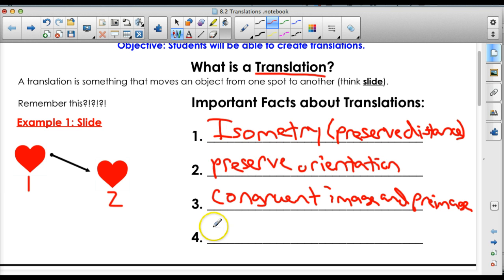And then finally, number four is there are no invariant points. Now, what does that mean? That means every point moves. Remember what invariant means? It's that the point isn't affected or it doesn't change based on the transformation. Well, in translations, every point is going to move. So there are no invariant points for a translation.